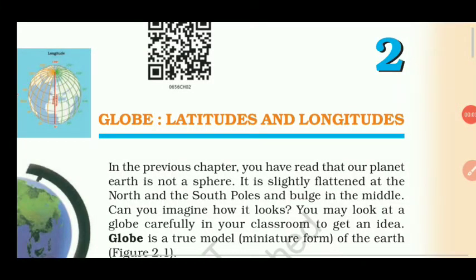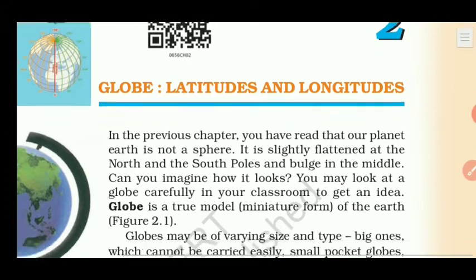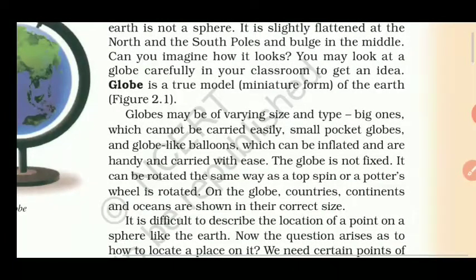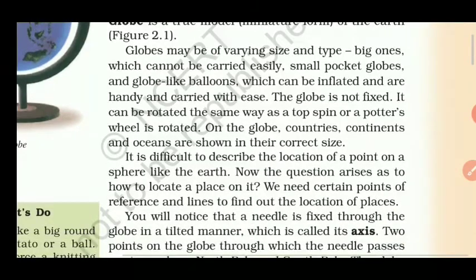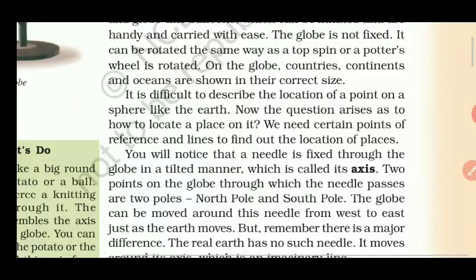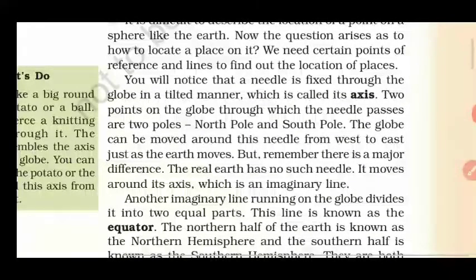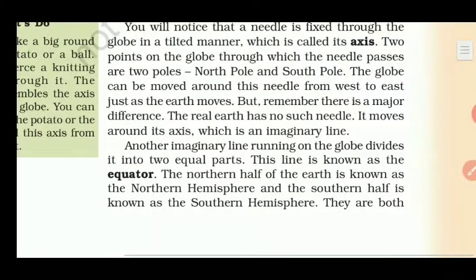Good morning students. In the last video of this chapter, Globe Latitudes and Longitudes, we studied that a globe is a true model of the earth. Globes may be in different sizes. On the globe, countries, continents and oceans are shown in their correct sizes. There are different imaginary lines through which we can locate any place on the globe, and one imaginary line is the axis on which the globe can be moved. Now let's see another imaginary line of the globe.